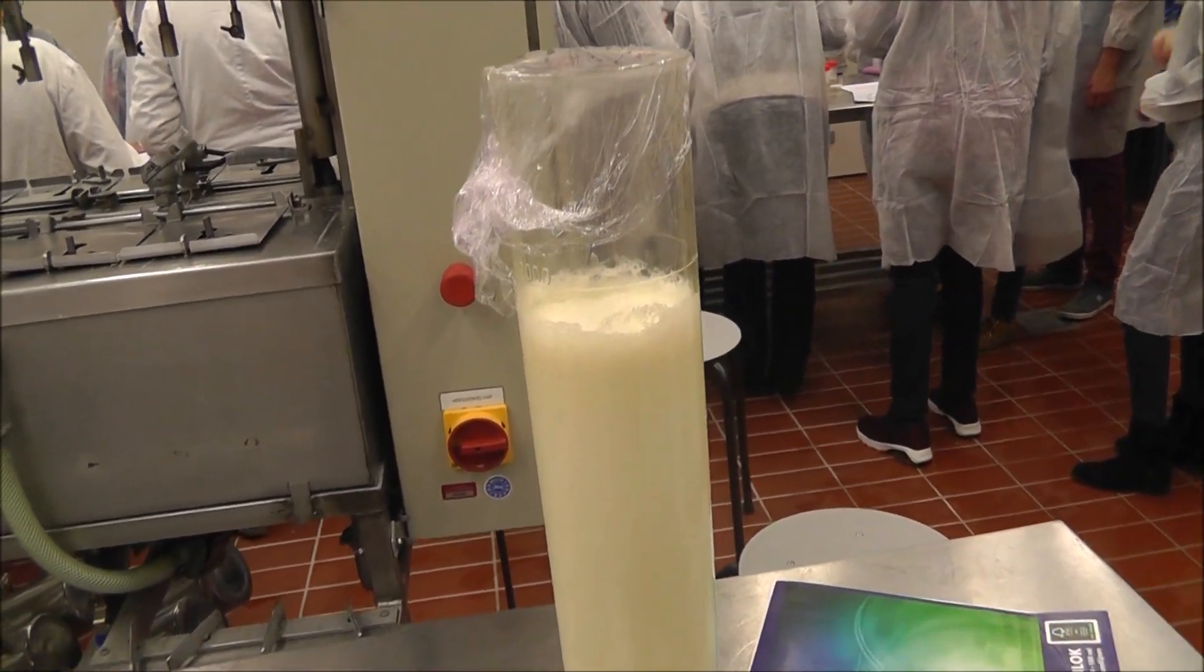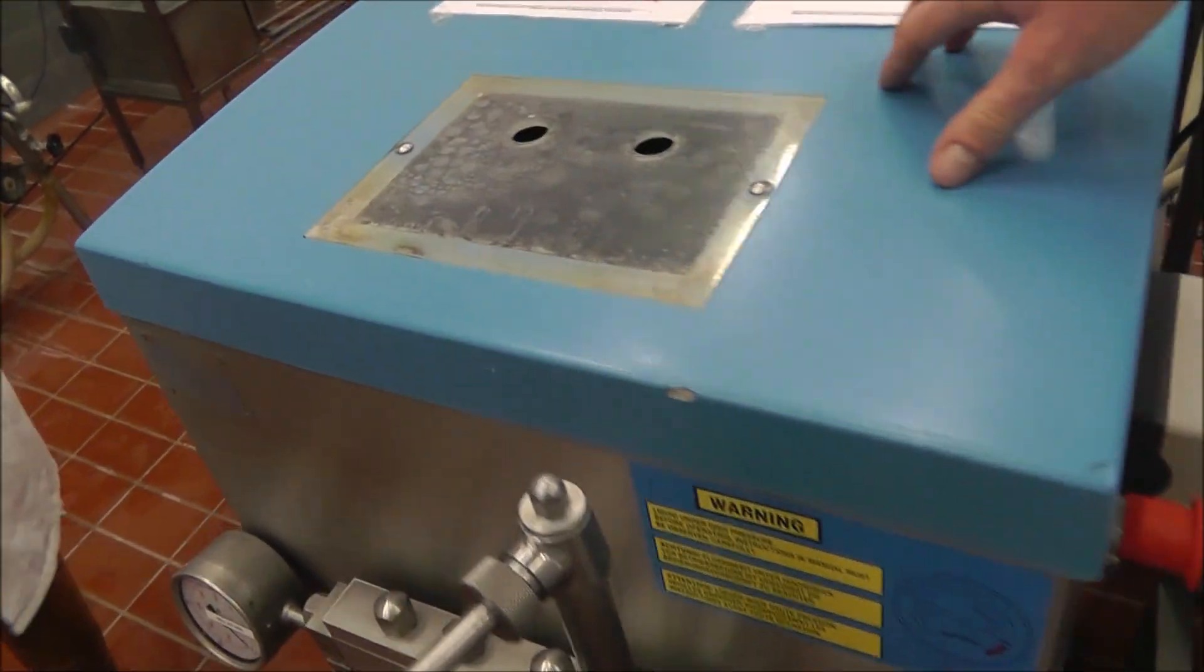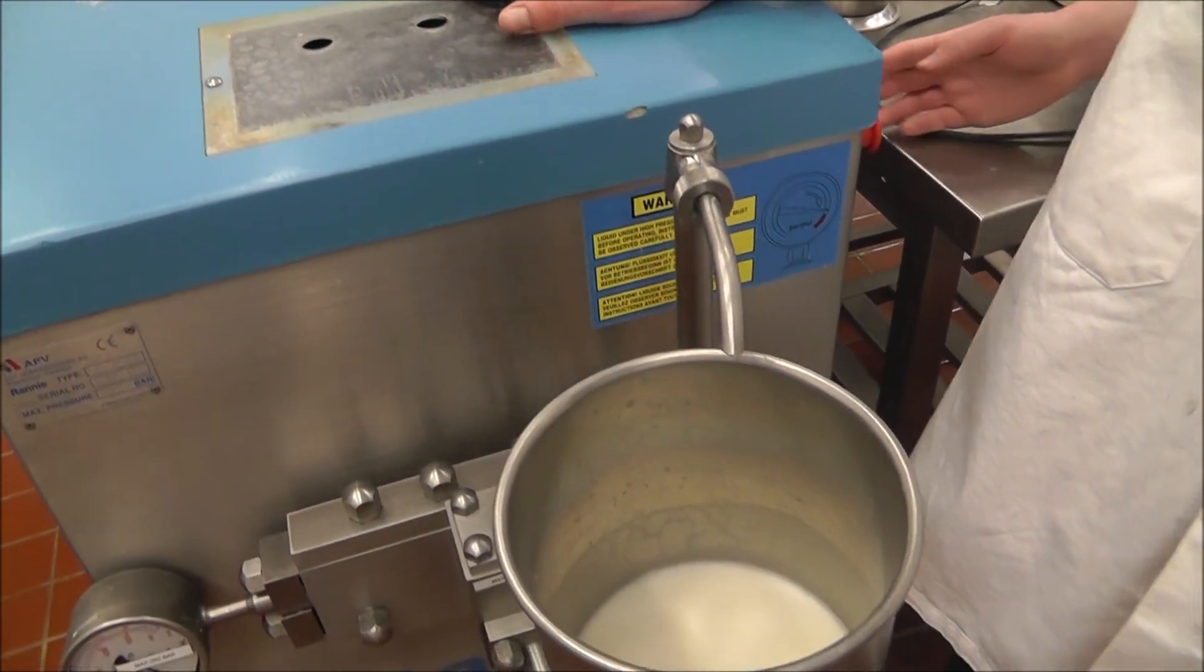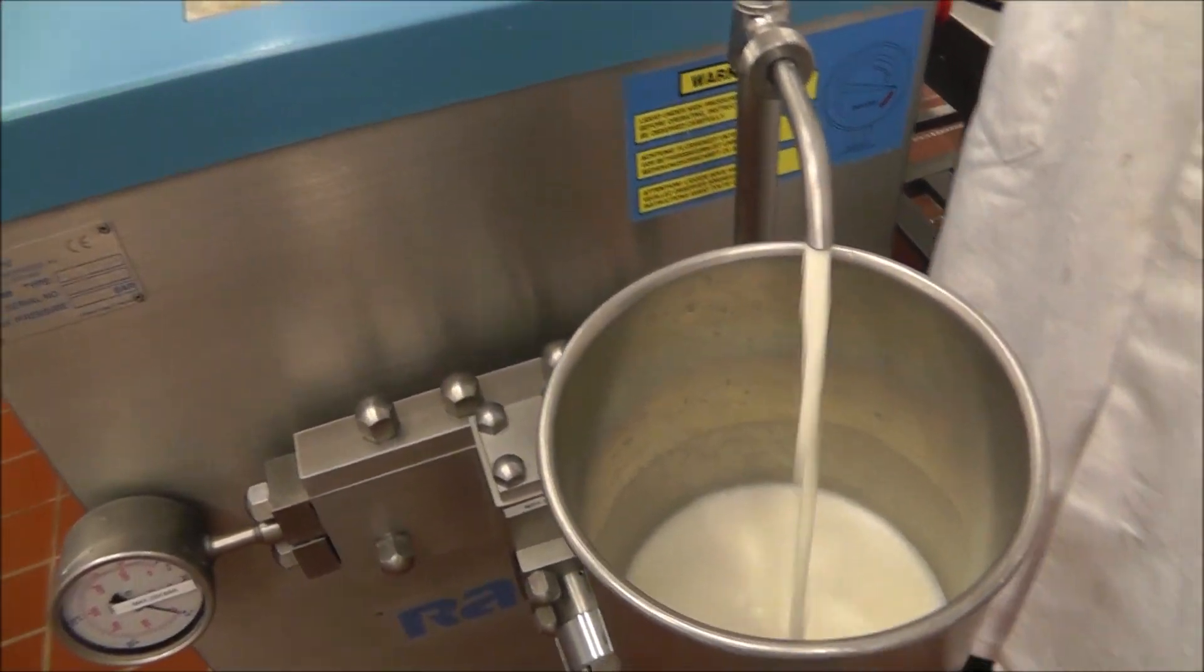So we process this milk a little bit. We use this machine to homogenize it. Homogenize. And this is called with a cylinder.